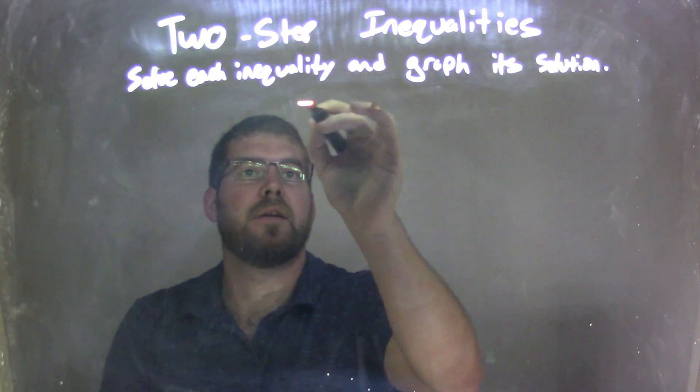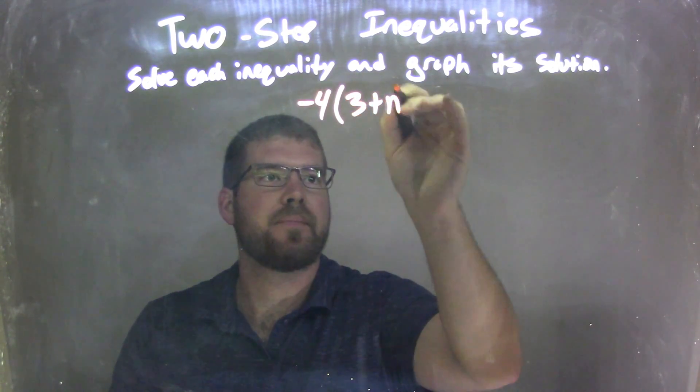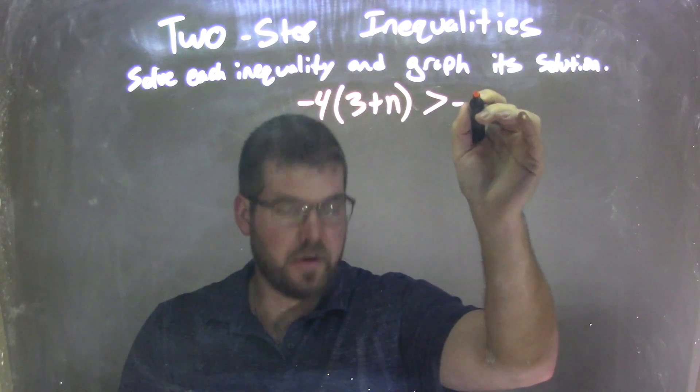So if I was given this inequality, negative 4 times 3 plus n is greater than negative 32.